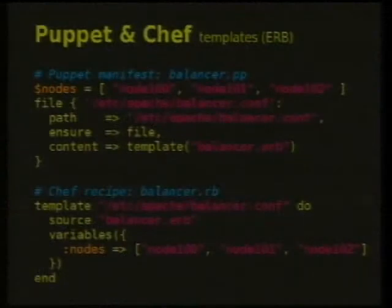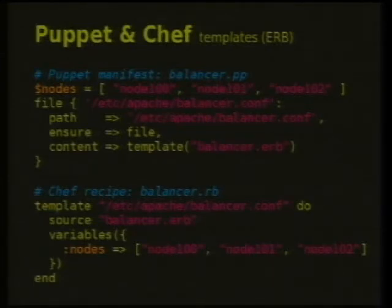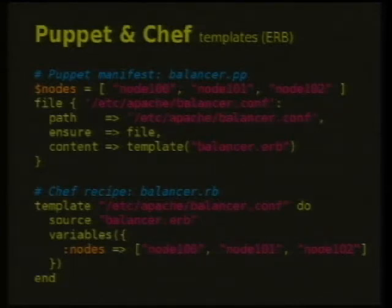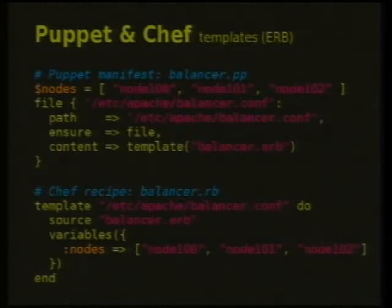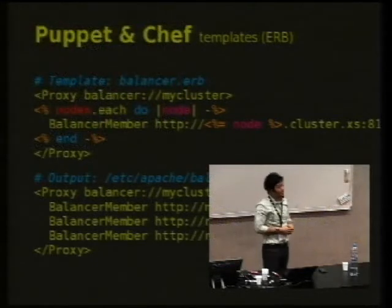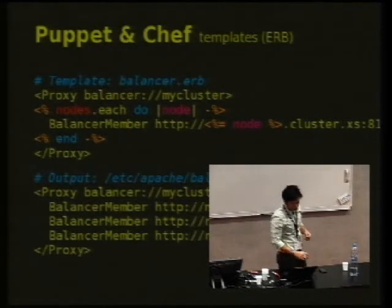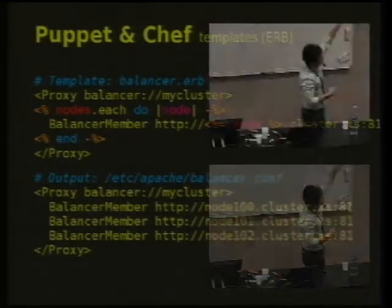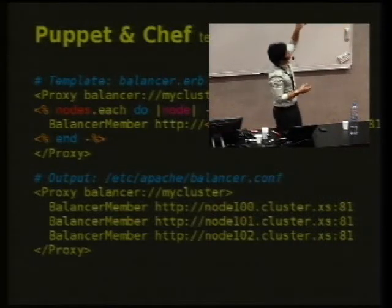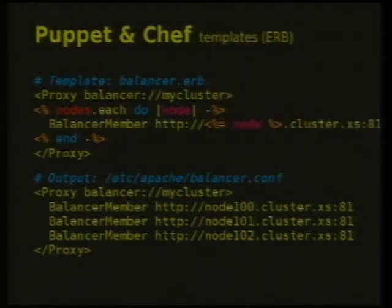Another nice concept they both have is Templates. You have a lot of config files with similarities, and generating these config files makes life much easier. Puppet is at the top, Chef below — you can see the syntax to create a template is pretty similar. In this example, we have three nodes and we want to create an Apache Balancer configuration. I have nodes 100, 101, and 102 and pass them to a template file. The template is written in ERB — a Ruby template language. The syntax is straightforward: you have a nodes array, loop through it, and for every node print out a line. You get the output as the actual Apache configuration file. It's exactly the same for Puppet and Chef — the same ERB language.